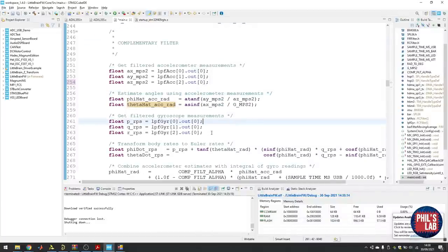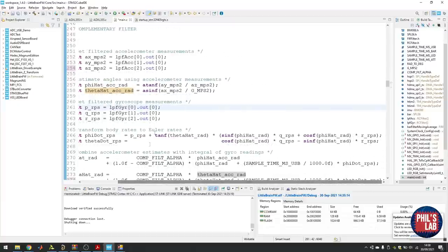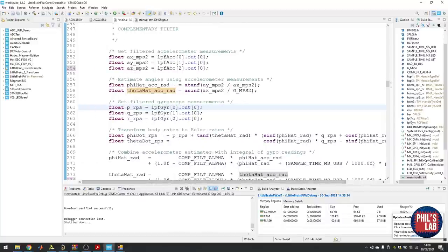The next part is the gyroscope. I get my filtered gyroscope measurements P, Q, and R in my body frame. I have to transform my body rates to the Euler rates, which you can see in the previous video and in the slides. Then I get phi dot and theta dot in radians per second, and that's the gyroscope part.